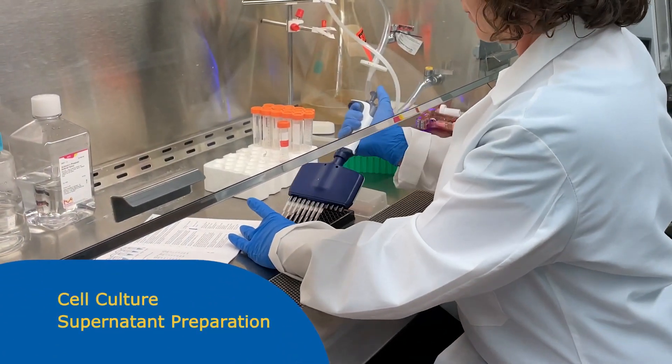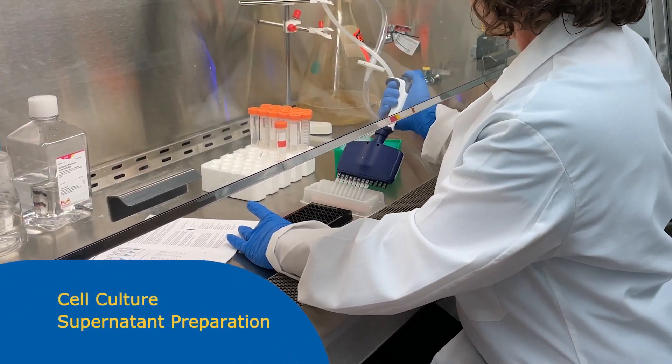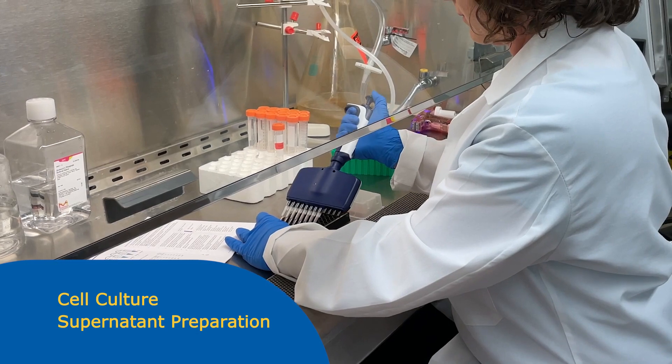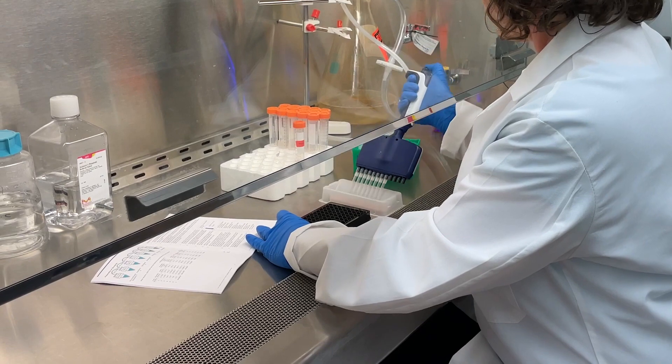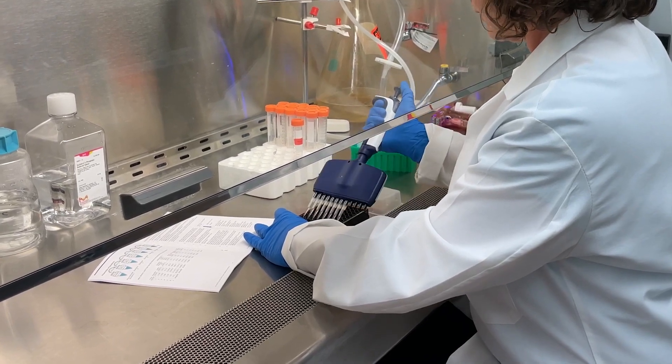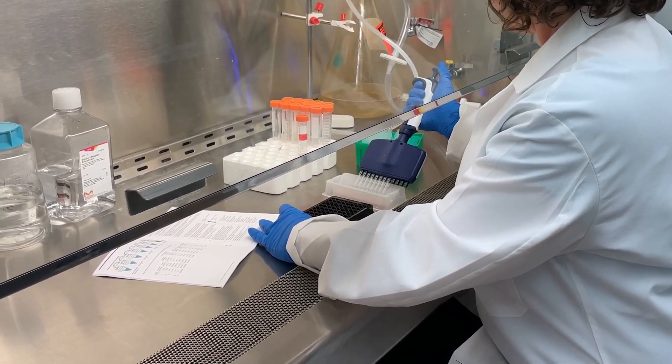Cell culture samples should be centrifuged to remove debris and assayed immediately, or stored at minus 20 to minus 80 degrees Celsius until needed. Fresh culture media should be used as the matrix solution in the blank, standard curves, and control wells.